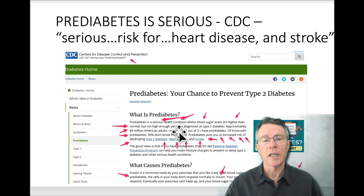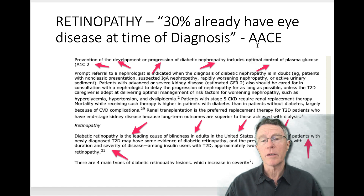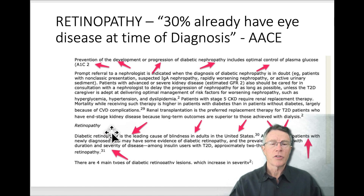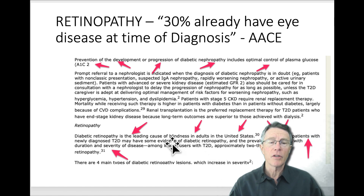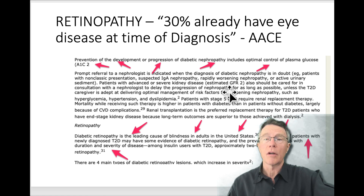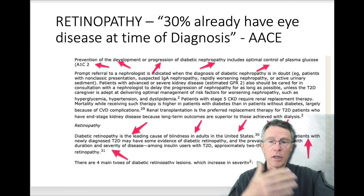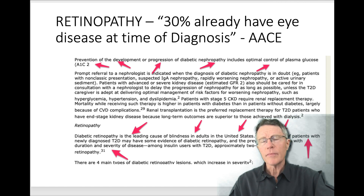Here's a quote from the CDC saying pre-diabetes is a serious health condition where your blood sugar is elevated, and it sets you up for increased risk for developing type 2 diabetes, heart disease, and stroke. And from the American Association of Clinical Endocrinologists: diabetic retinopathy is a leading cause of blindness in the United States, and about 30% of newly diagnosed type 2 diabetes patients already have evidence of diabetic retinopathy. So it's a very serious disease, no matter what you call it — metabolic syndrome, pre-diabetes, or insulin resistance. We'll cover how prevalent it is, how to diagnose it, and what to do about it in later videos.